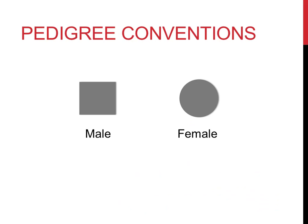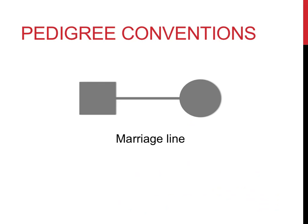One important characteristic of pedigrees involves the shape of the symbols. In pedigrees, squares represent males, while circles represent females. There are many lines within pedigrees connecting these circles and squares. Horizontal lines that connect two individuals indicate that they produced offspring, and they're often referred to as a marriage line.